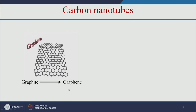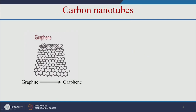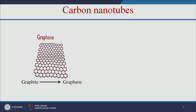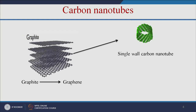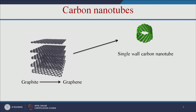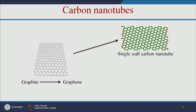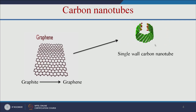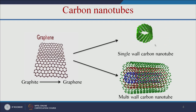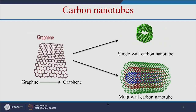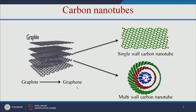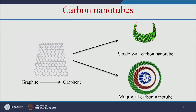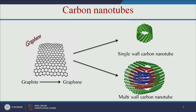Graphene is obtained from graphite. If a single layer of graphene is rolled into a tubular form, that is called a single wall carbon nanotube. If multiple layers of graphene are used, that is called multi-wall carbon nanotubes.